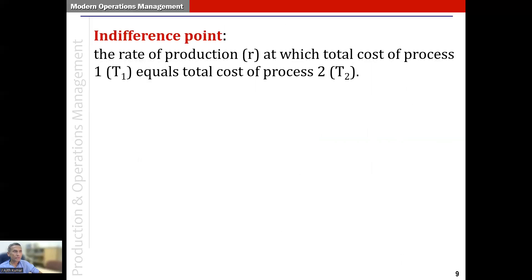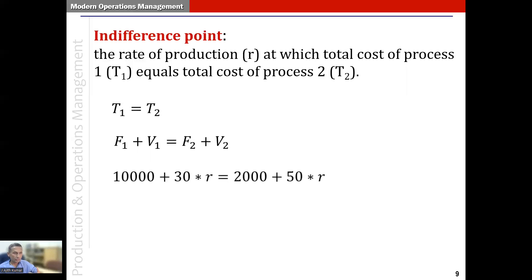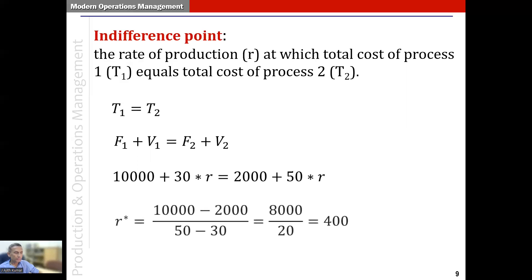The indifference point is defined as the rate of production r at which the total cost of option one equals the total cost of option two. Since revenue is the same, we only look at total costs: T1 equals T2, meaning F1 plus V1 equals F2 plus V2. Substituting the numbers into this equation tells us that the indifference point r-star equals 400.